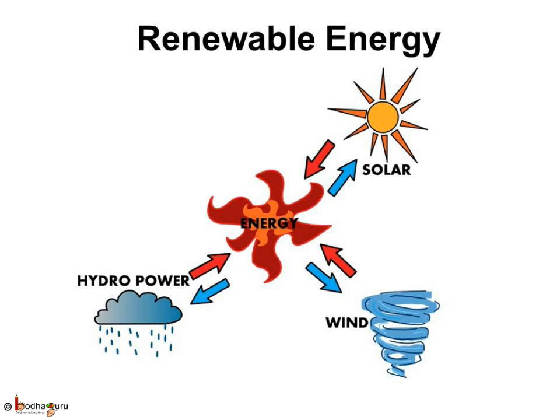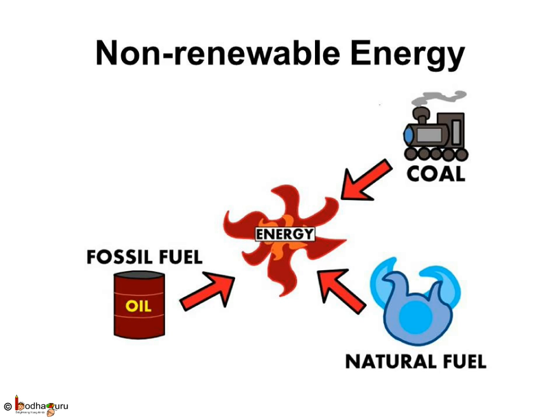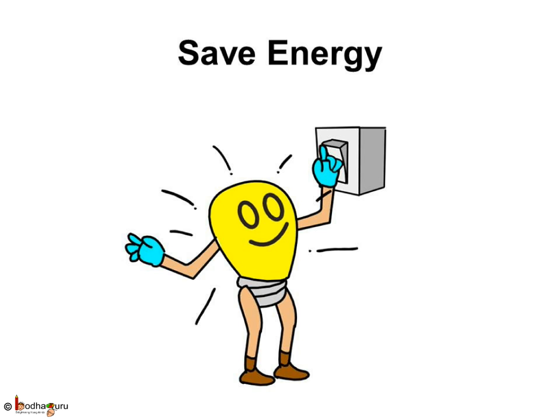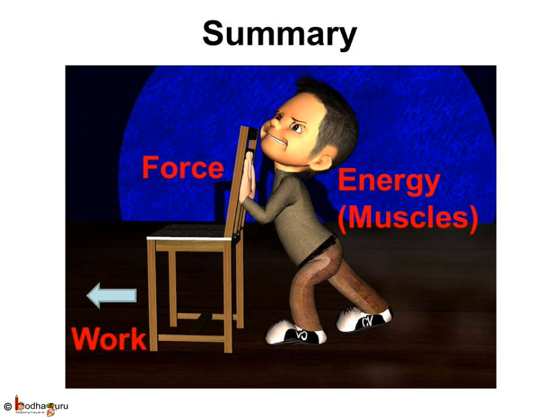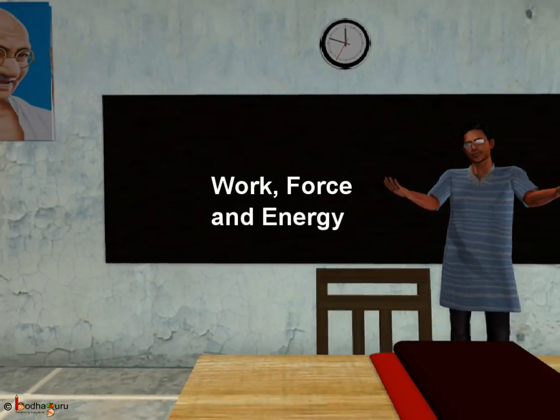So now we know energy comes from different sources — some renewable, some non-renewable — and we should use energy carefully and not waste it. In a nutshell: energy is the ability to apply force, like muscular energy helping a person push a chair. Force means pushing or pulling an object, and whenever force is applied and the object moves, the work is done. Very simple. Goodbye kids!